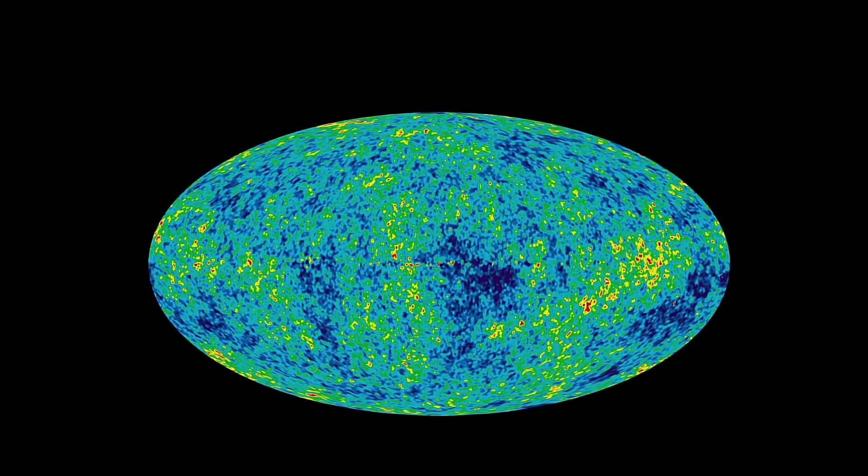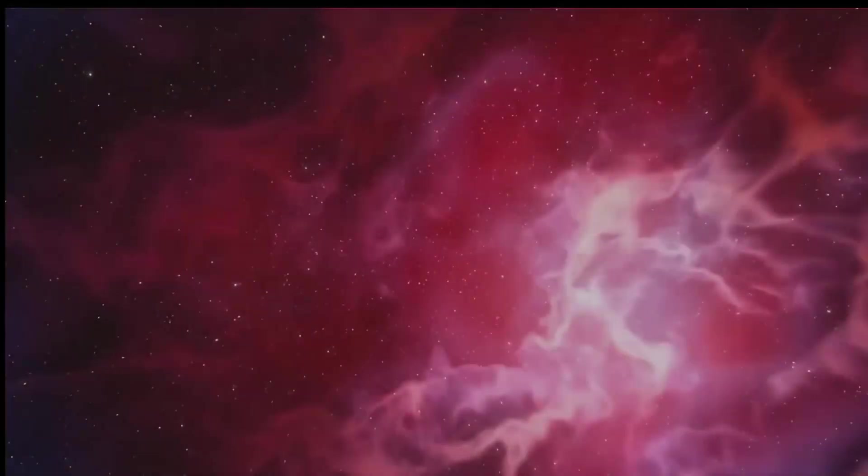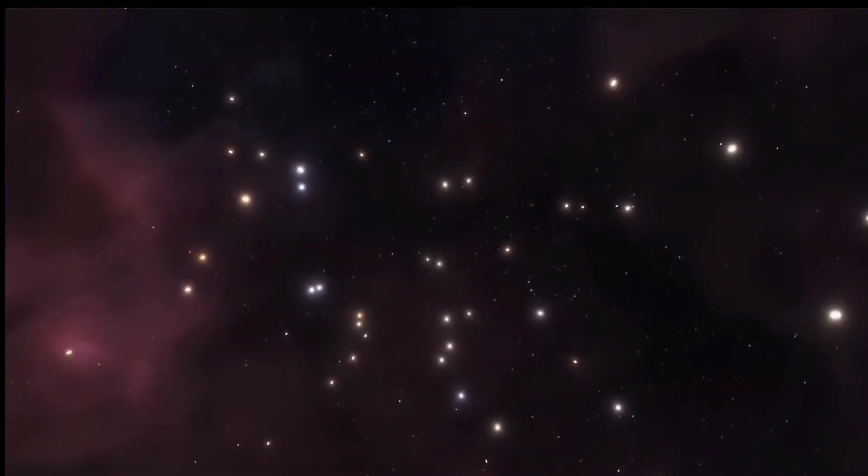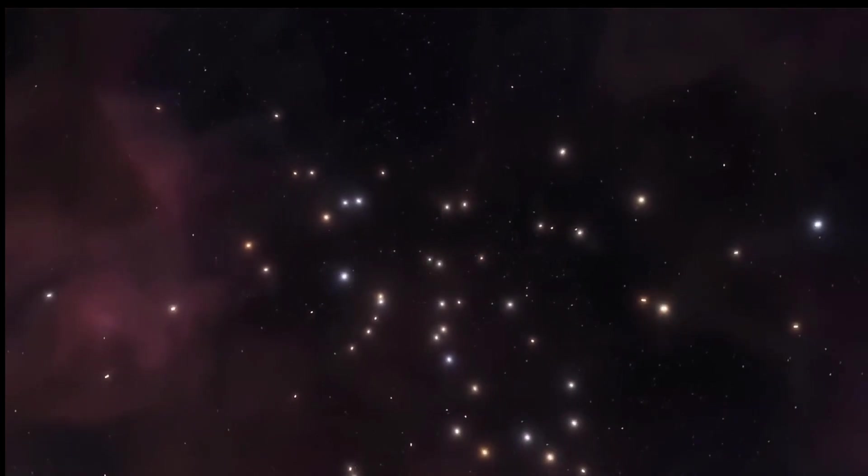And then, because that light's been travelling through the universe, we can see how that ruler's been distorted as the light has travelled through space. And so, we can infer whether space is flat or curved or how it warps, just from that measurement.